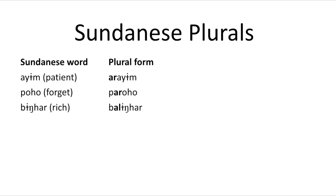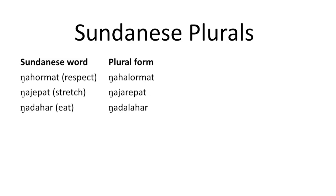Then we've got these extra ones with the 'ngah' at the beginning. As you can probably see, the 'al' and the 'ar' are still there, but this time they're a syllable later. So what we have to assume is that when you've got the 'ngah' on the beginning, they come after the second consonant rather than the first one.